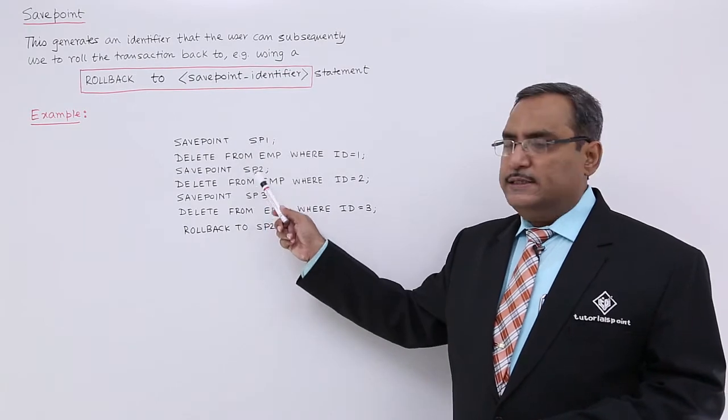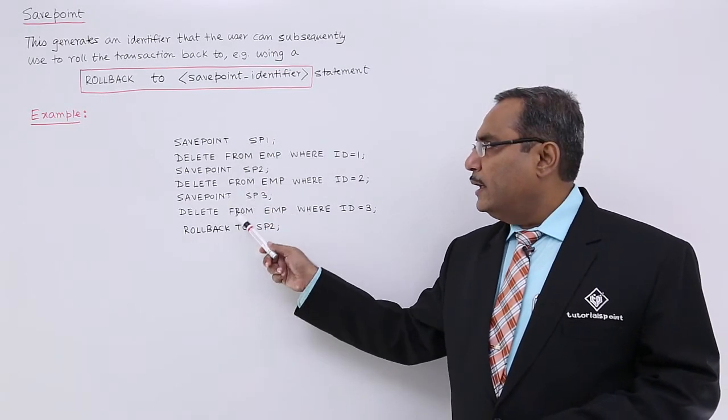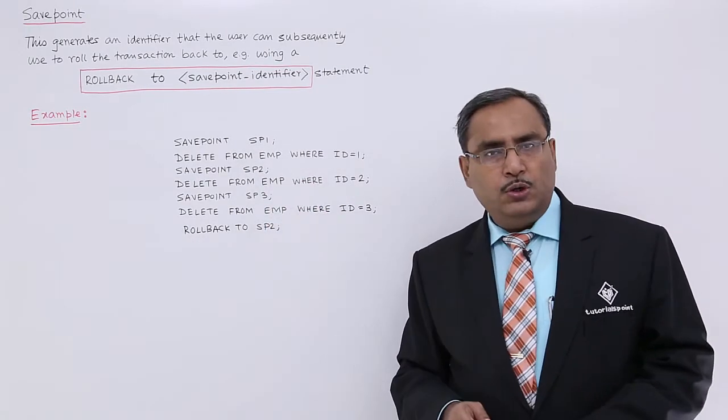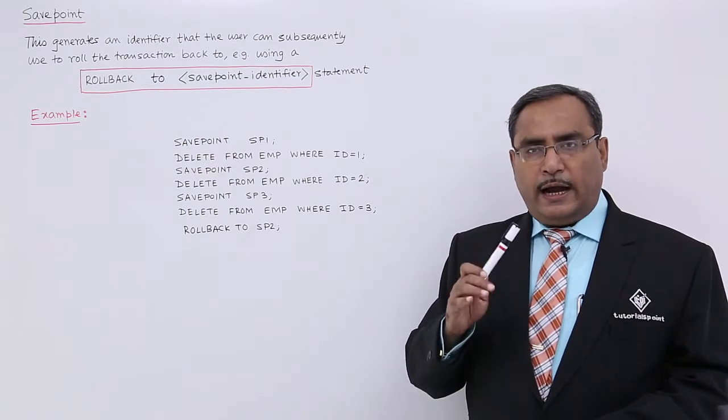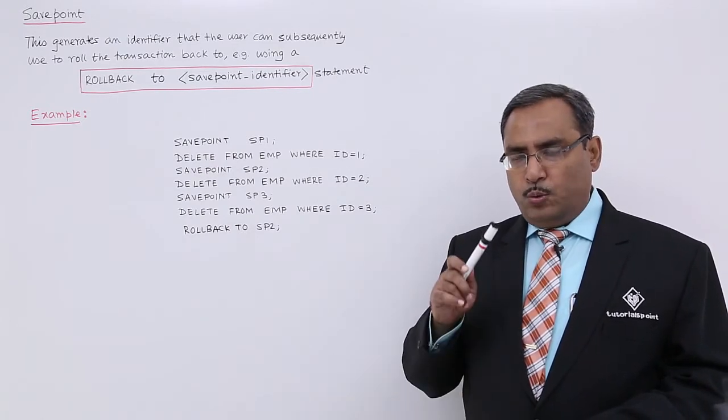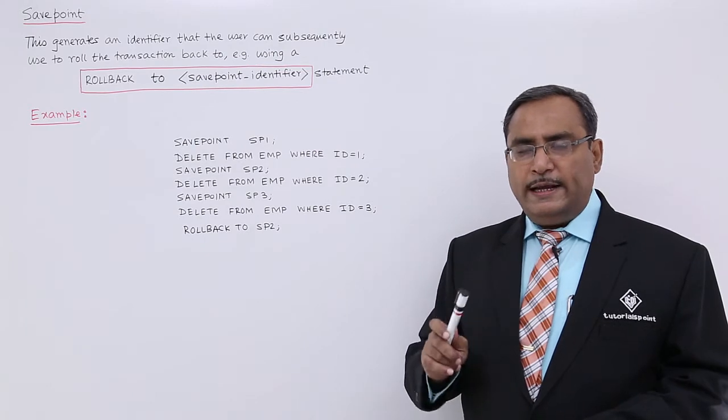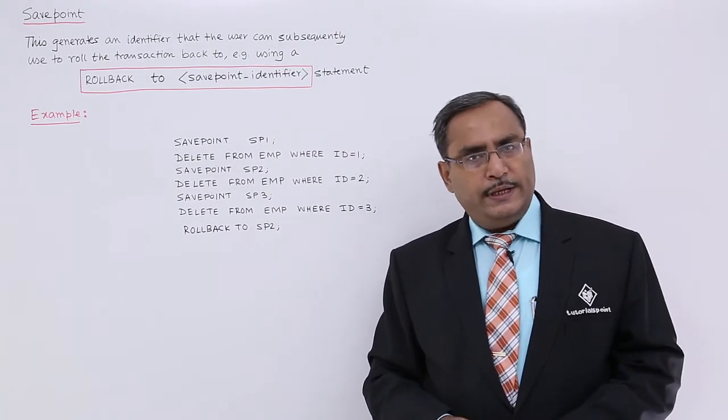If we do not keep this SavePoints here and if we do only rollback, then all the transactions will be undo. You can find that ID 1, ID 2, ID 3 with this 3 respective IDs, you will be finding the tuple in the EMP table.